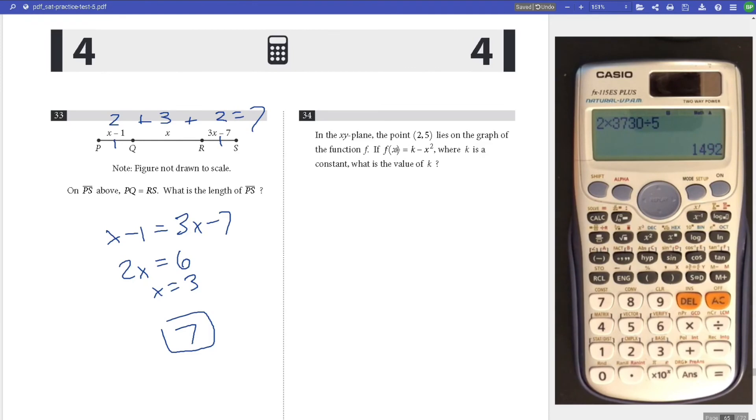Number 34, in the xy plane, the point (2,5) lies on the graph of function f. If f(x) equals k minus 2x squared, where k is a constant, what is the value of k? Plug in the coordinates. k minus 2 squared equals 5, so k minus 4 equals 5, k equals 9. That is your answer.